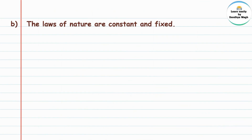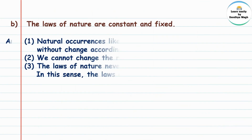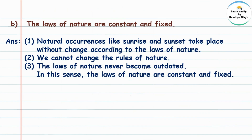The laws of nature are constant and fixed. Natural occurrences like sunrise and sunset take place without change according to the laws of nature. We cannot change the rules of nature. The laws of nature never become outdated. In this sense, the laws of nature are constant and fixed.